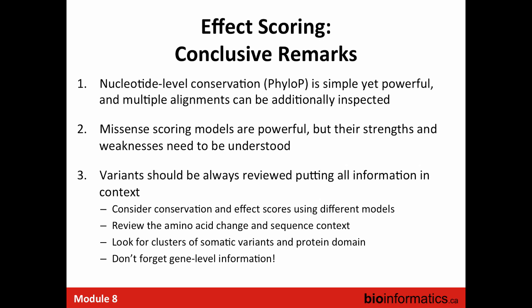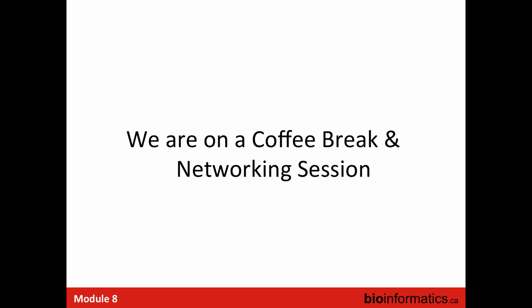To summarize: nucleotide-level conservation is a simple and powerful approach. It's important to look at multiple alignments and other gene features when assessing variant impact. Missense scanning scoring models are more powerful than tools for regulatory elements or splicing regions. When reviewing variant predictions, consider conservation, effect scores from different models, amino acid changes, sequence context, protein domain membership, clustering of somatic variants to particular protein domains, gene-level information, and other available annotations.